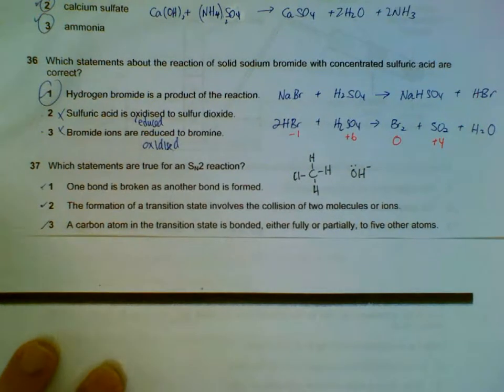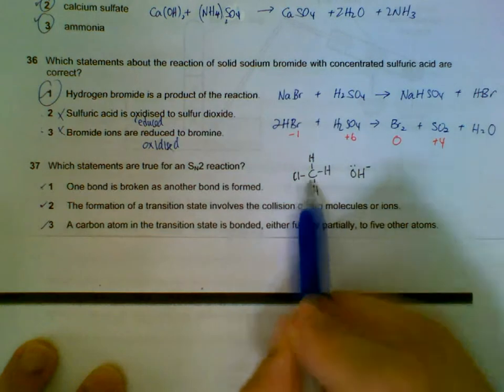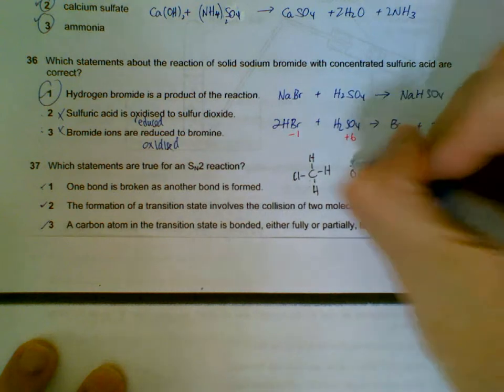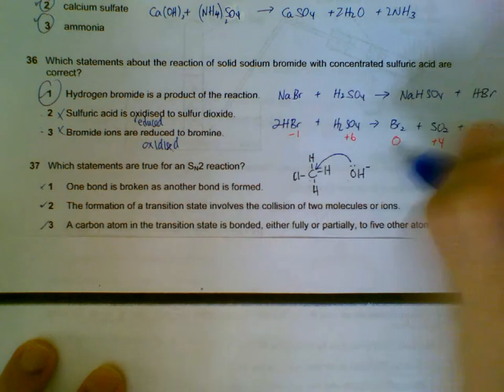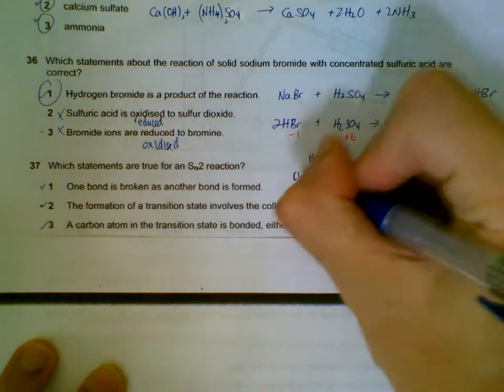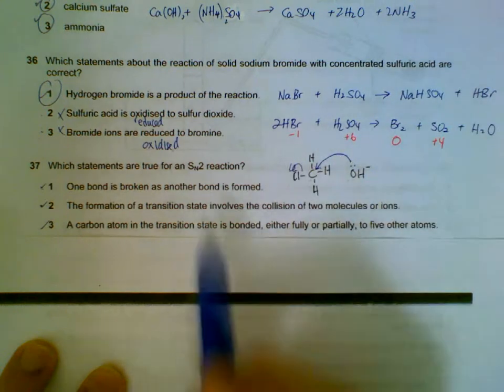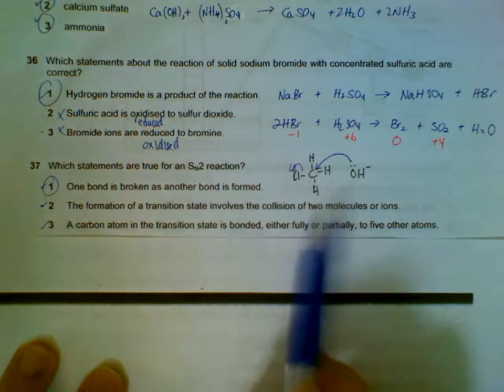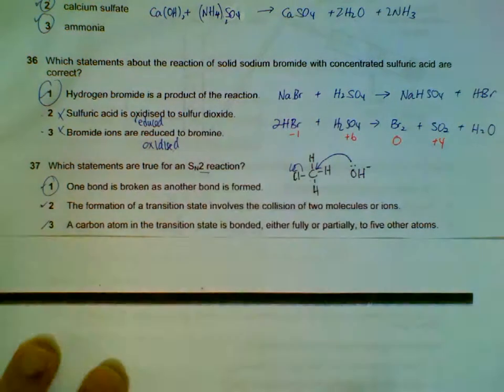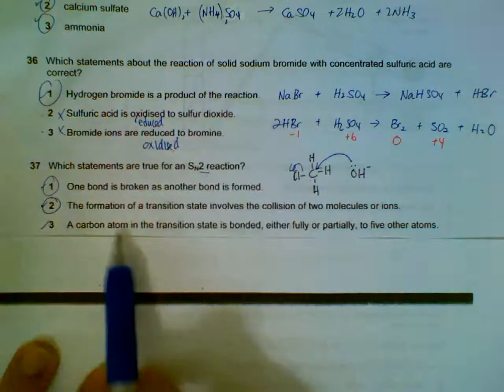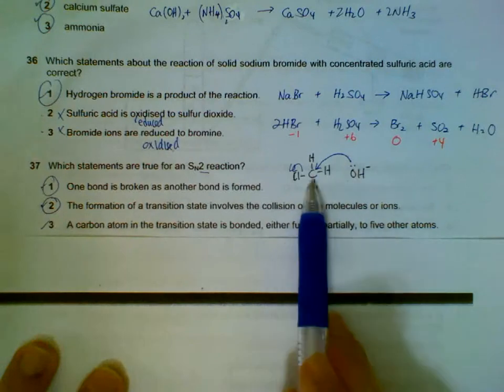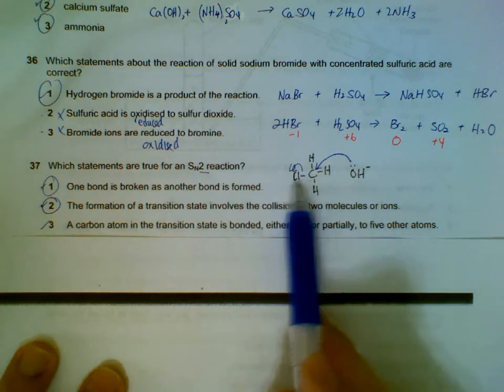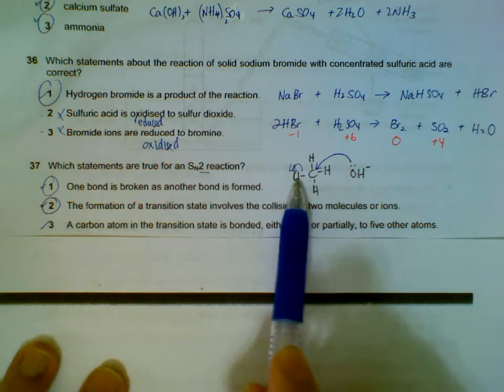Number 37: SN2 reaction. I'll use one as an example - we have chloromethane and your nucleophile is OH⁻. If it's SN2, there will be bond breaking and bond forming at the same time. You require two molecules to collide or two ions to collide - that's where the two comes from, SN2. In the transition state the carbon is actually joined to five at the same time, and because it hasn't fully formed the bond for the incoming one and hasn't fully broken the bond for the one that's leaving.